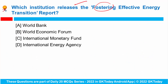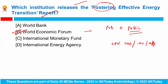Which institution releases the Fostering Effective Energy Transition Report? The World Economic Forum releases this report. As per this study, urgent action by both the private and public sectors is required to ensure a resilient energy transition to address challenges to environmental sustainability, energy security, and affordability. The special edition report, launched in collaboration with Accenture, listed recommendations for governments, companies, and consumers to progress the energy transition.